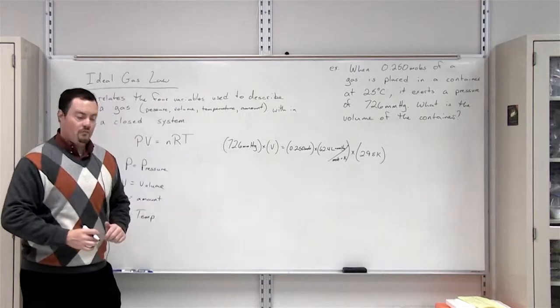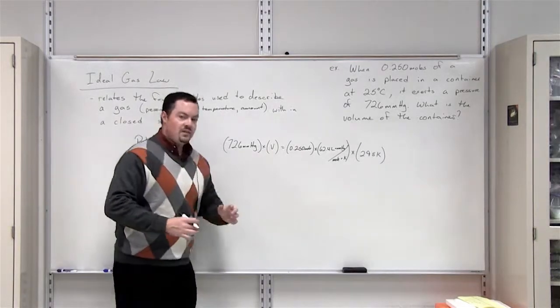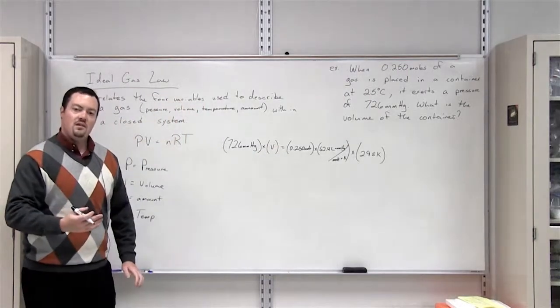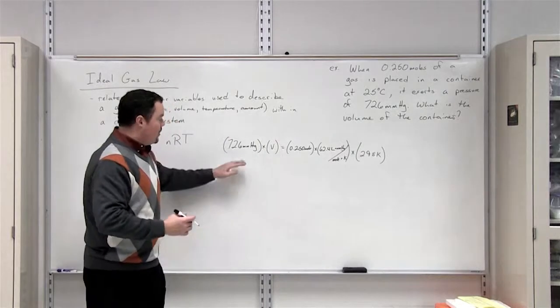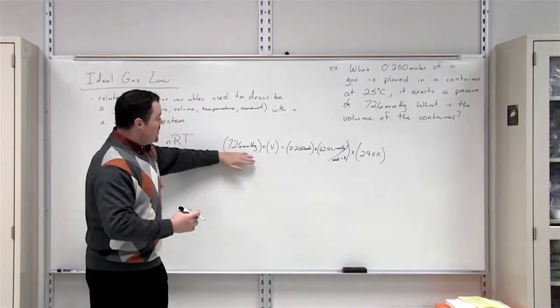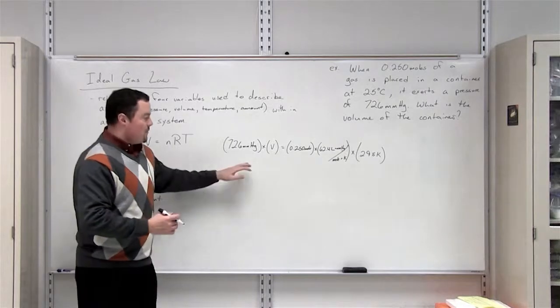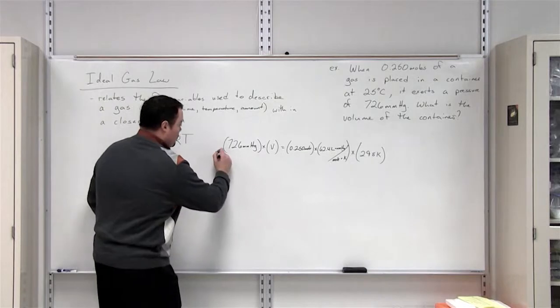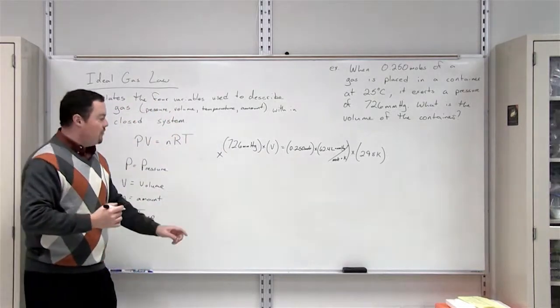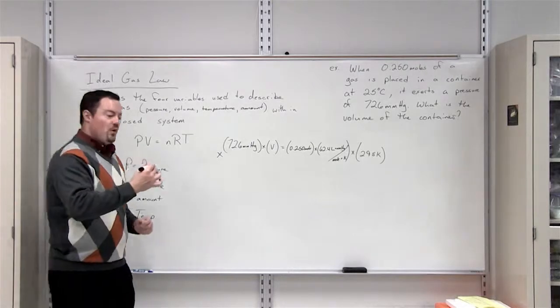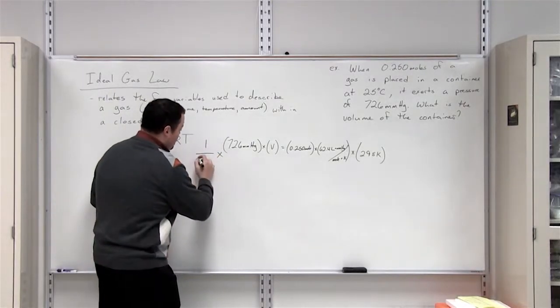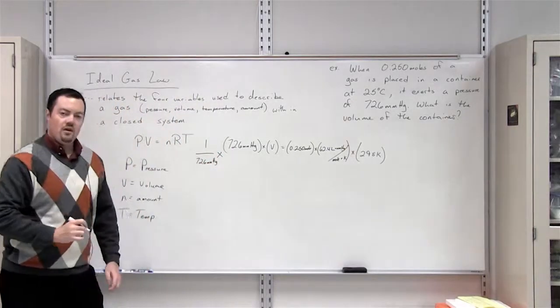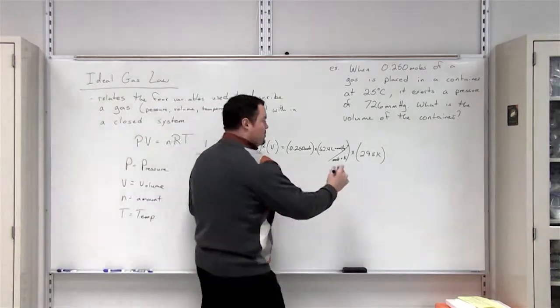We want to solve for volume. In order to solve for volume, we've got to get all of the variables on the same side of the equal sign as the variable that we want to solve for, in this case volume, over to the other side. So we need to get this 726 millimeters of mercury over to the right side of the equation. In order to do that, we are going to multiply by the inverse. Here 726 is in the numerator. It's on top. So the inverse is putting 726 millimeters of mercury on the bottom. What we do to one side, we have to do the other side.